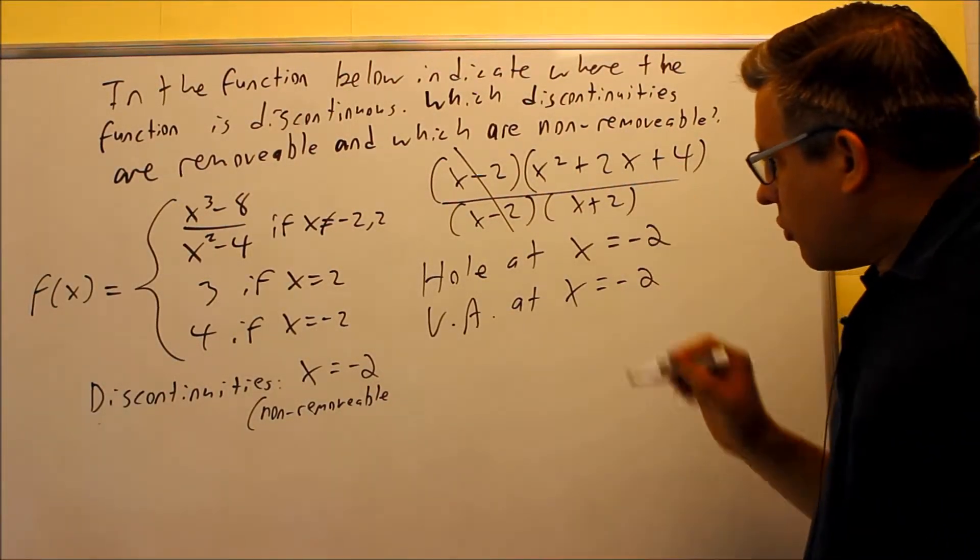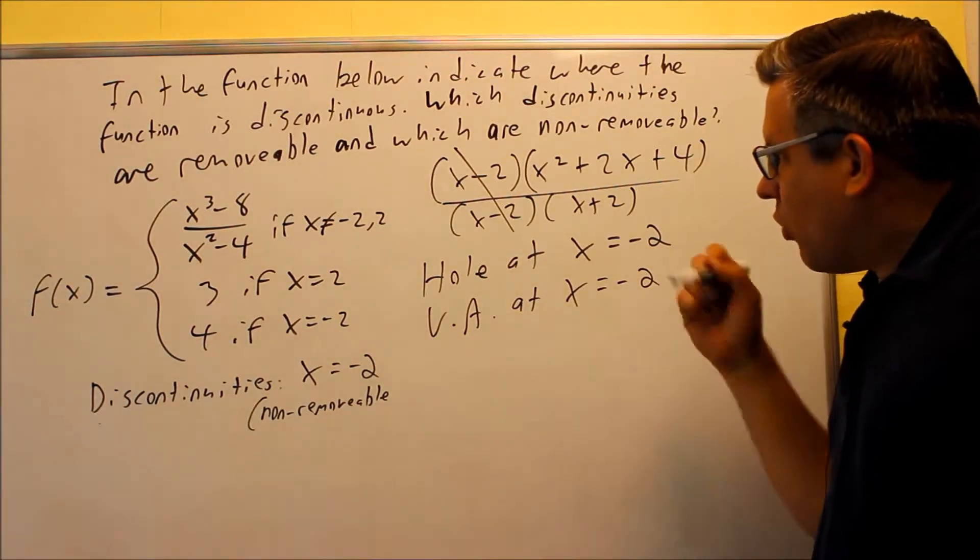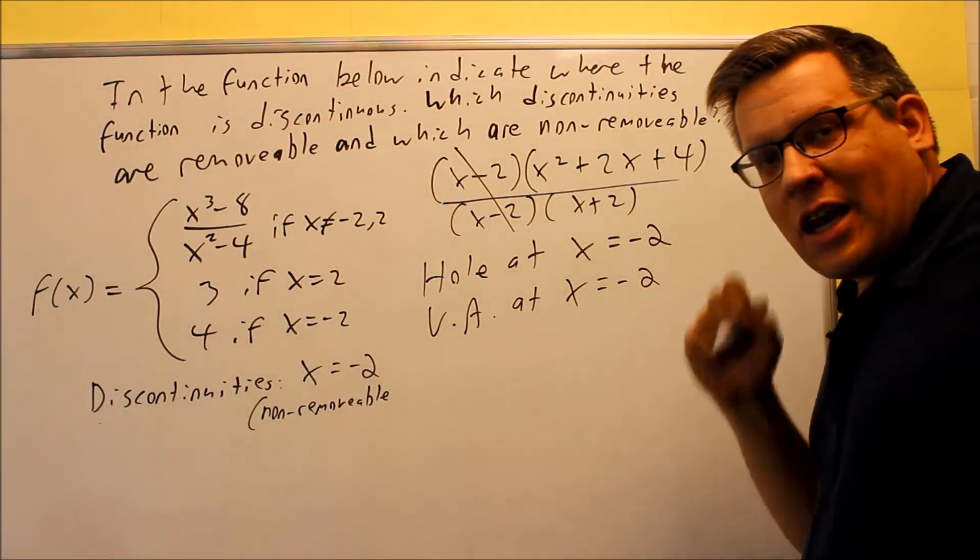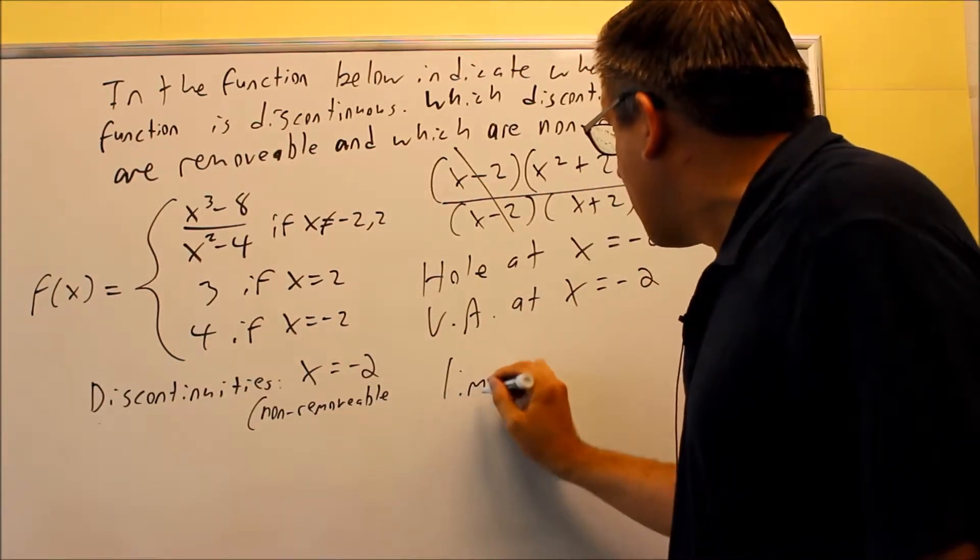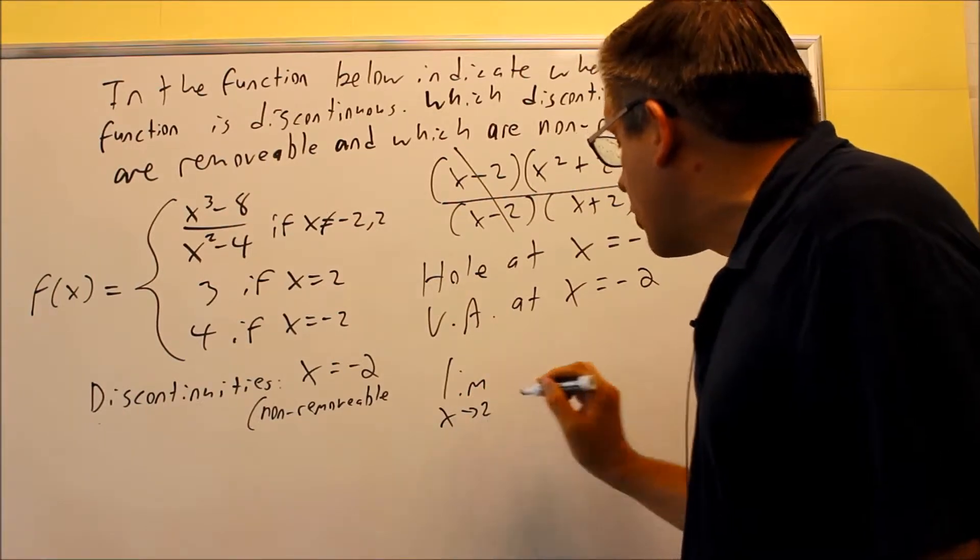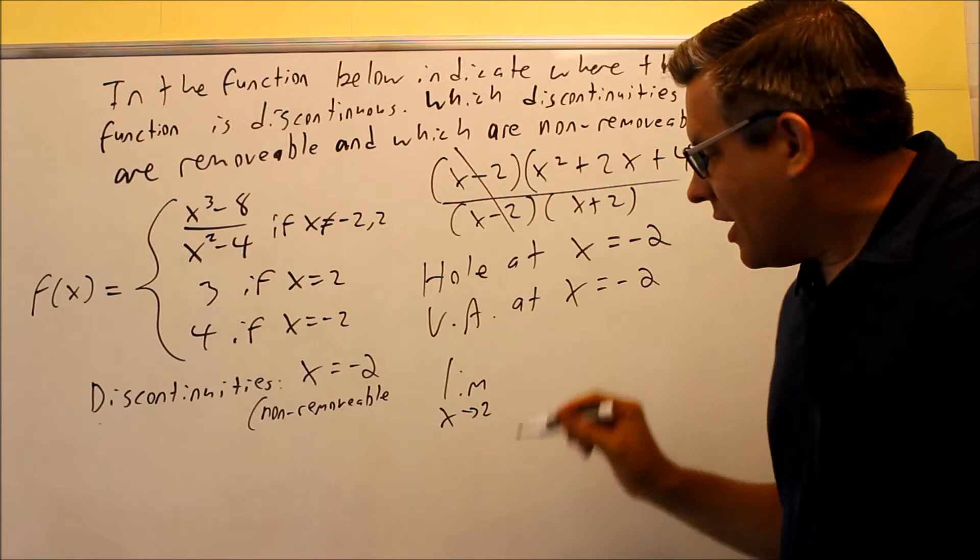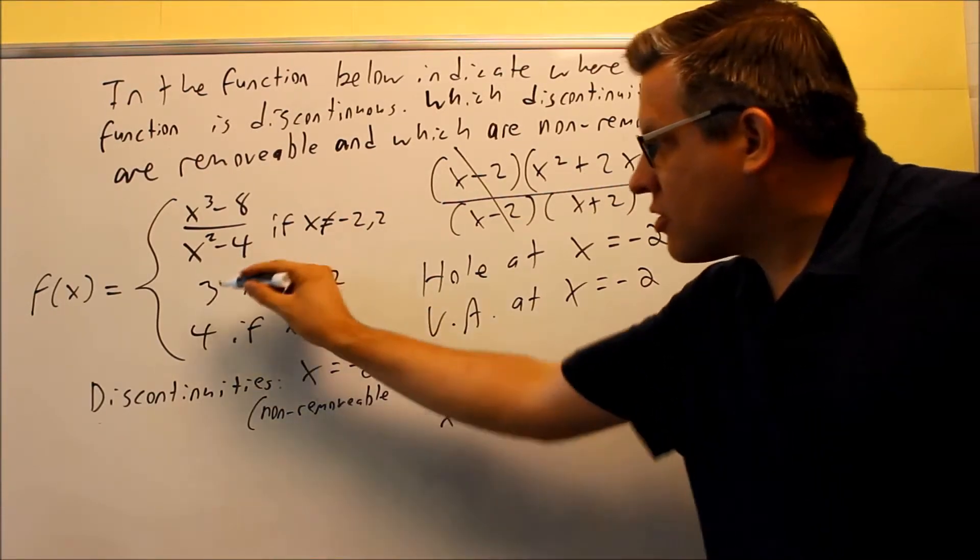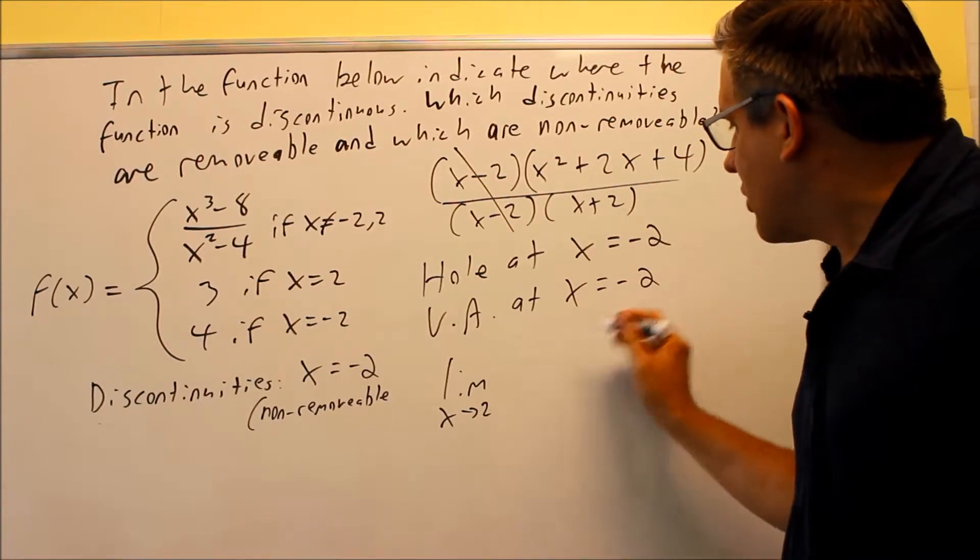But what about the hole? Can I fill in that hole? Will that be considered discontinuous? Well, in order to determine that, I need to actually take the limit. I need to find out what's happening. So this remaining function here, what I'm going to do is I'm going to take the limit as x approaches 2 and I'm going to see if it matches up with 3. Now, if it does, if the limit here does match 3, then I know it's going to be continuous at that point. So let's check it out.